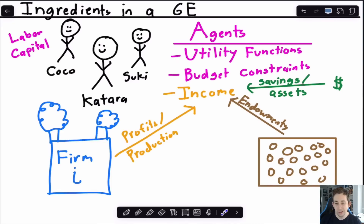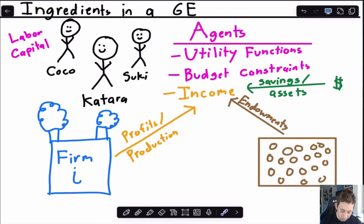On the other hand, some things are always going to be a given. For example, I always have a utility function, and I can think about what that utility function tells me about my preferences. I've got some budget constraints — where exactly my income comes from in that budget constraint could be from savings, endowments, production, profits, wages — all of those things could factor into my budget. But fundamentally, what I'm doing as Katara in this model is I'm trying to maximize my utility subject to a budget constraint. The amount of choices and the things that factor into the budget can vary, but fundamentally I'm just trying to solve a utility maximization problem.